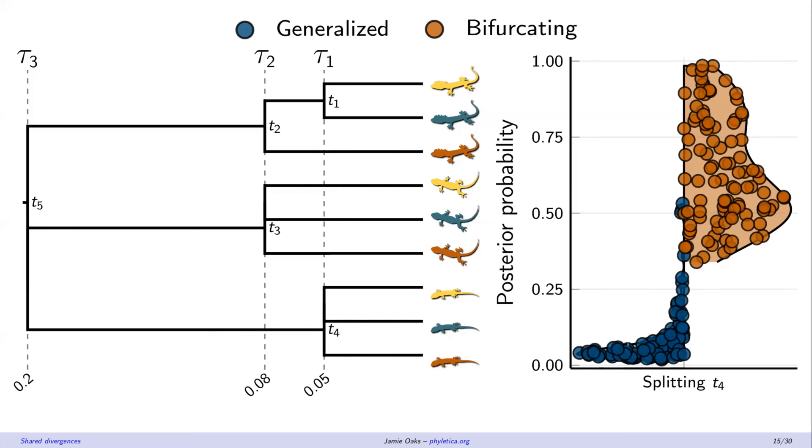Then the bifurcating model. So that looks good. We're not being overconfident in resolving branches that don't exist in the tree. And this is just showing that same plot for this other polytomy. So once again we're not finding strong support for a branch that doesn't exist here.